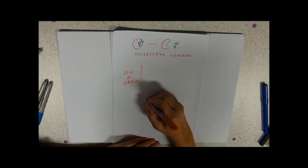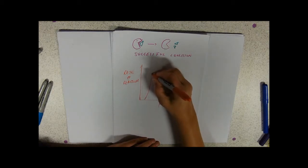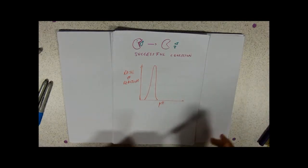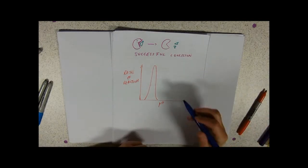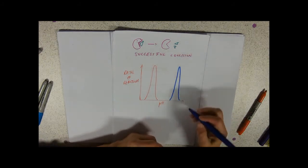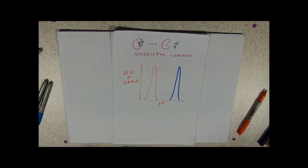With pH, what you tend to get is these very narrow curves and different enzymes have different optimum pHs and it pretty much depends on what kinds of bonds they've got.